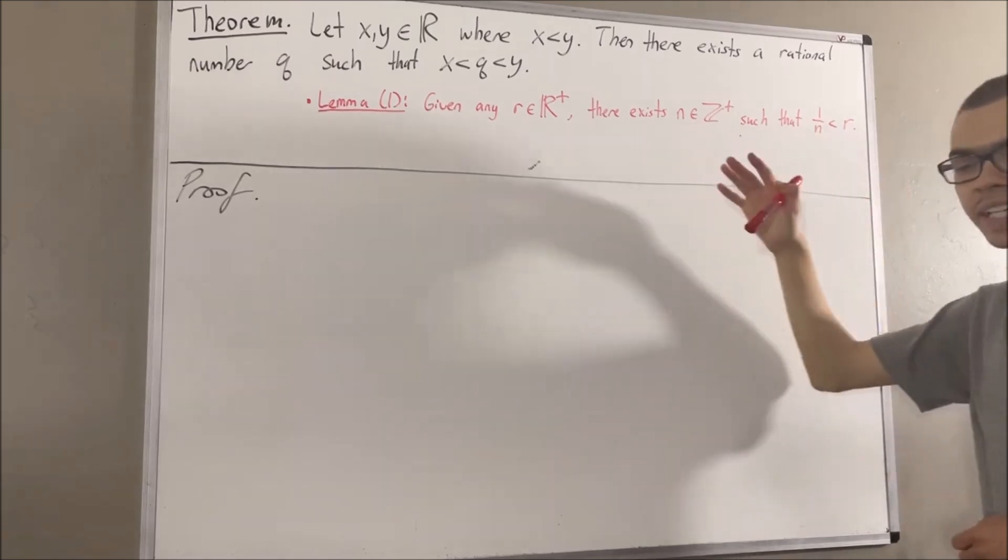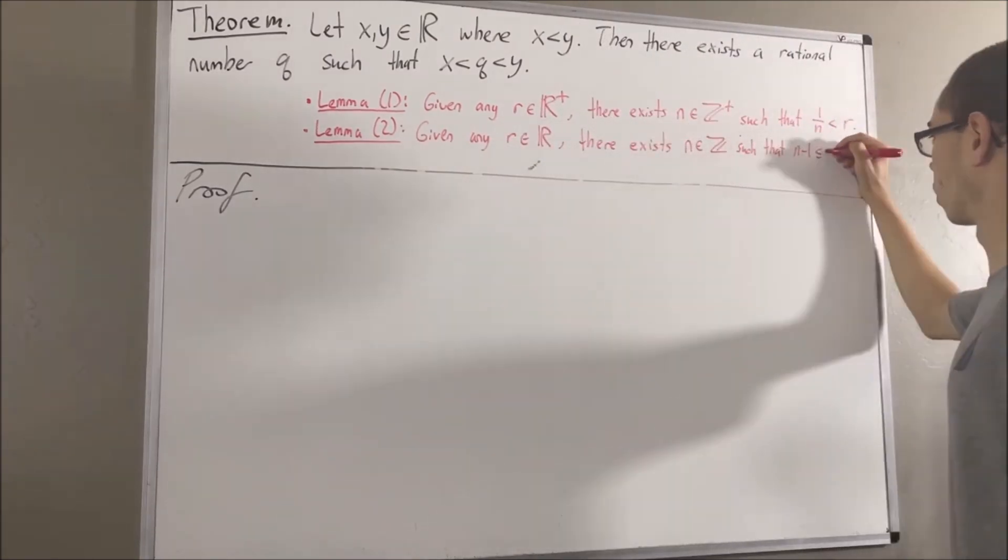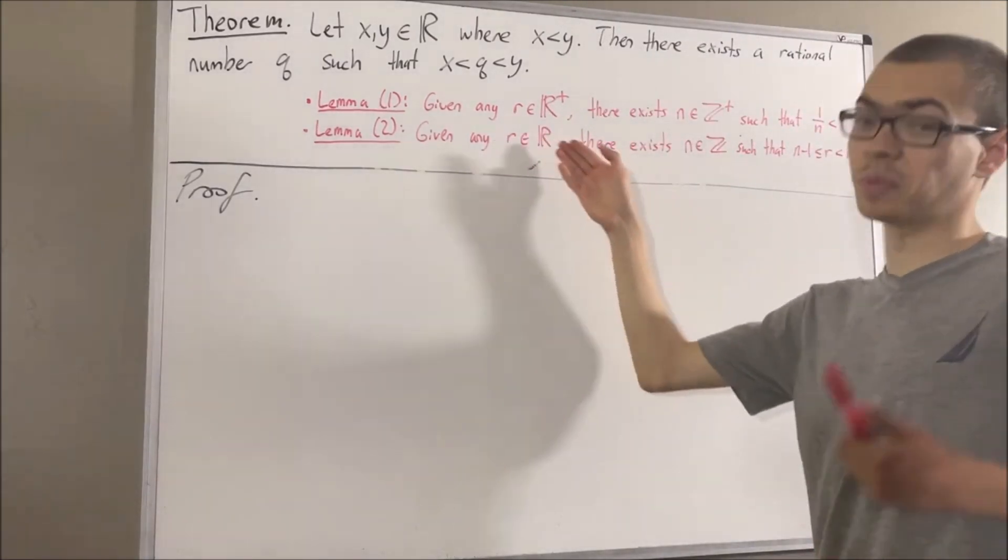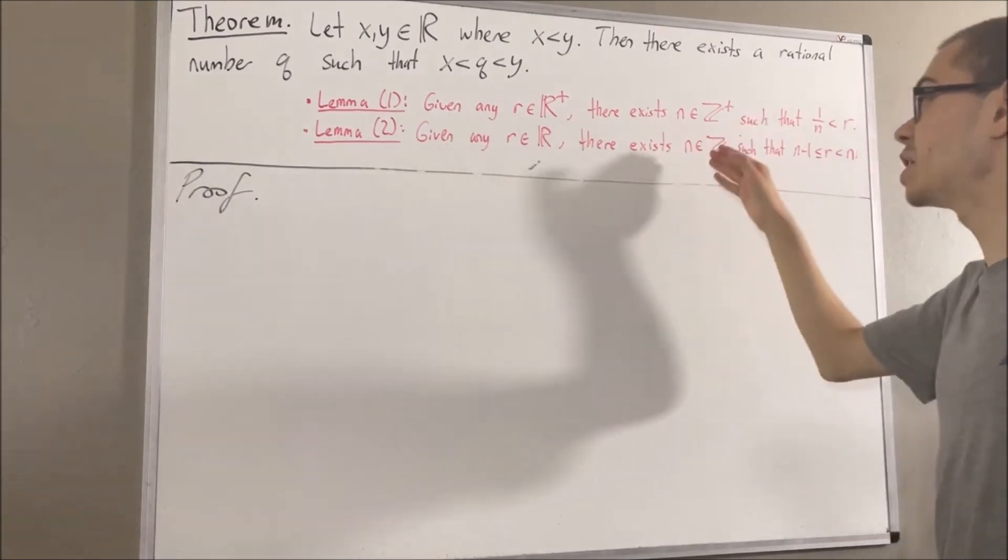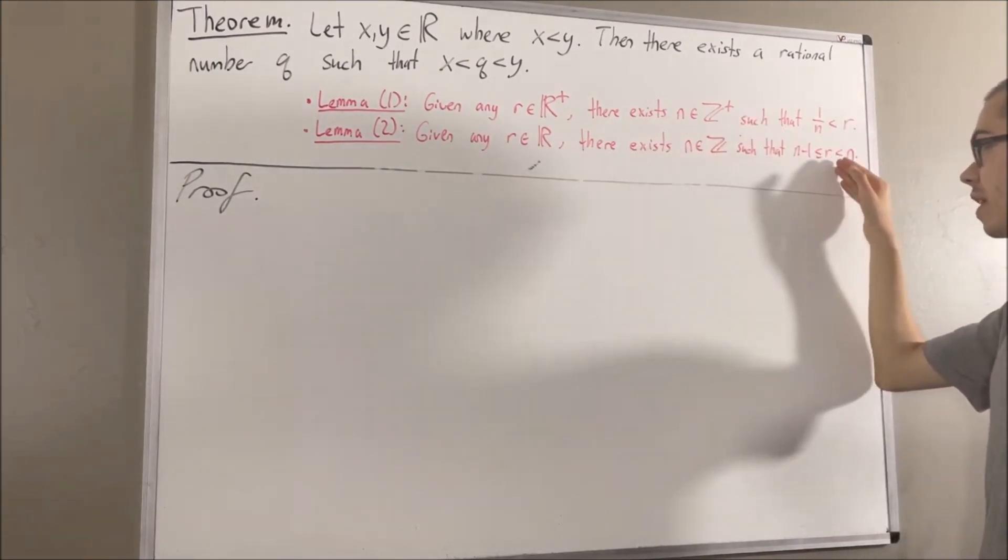And here's the second preliminary result. Given any real number r, there exists an integer m such that m minus 1 is less than or equal to r, which is less than m.